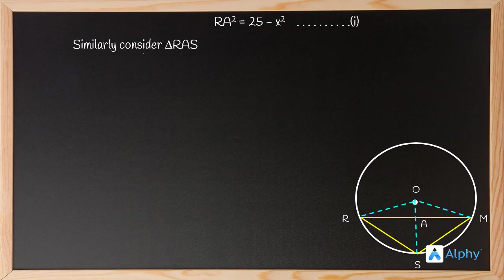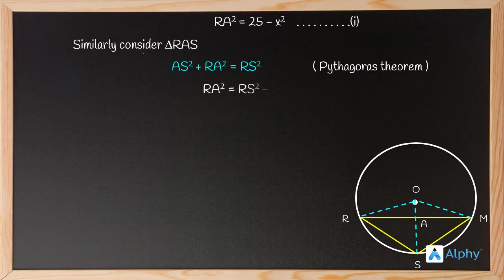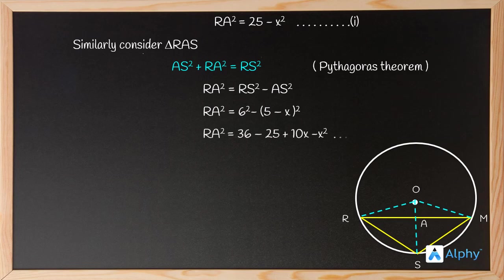Similarly, in triangle RAS, apply Pythagoras: AS² + RA² = RS², giving RA² = RS² − AS² = 6² − (5 − x)². Expanding using (a − b)² = a² − 2ab + b², and noting the negative sign causes a sign change: RA² = 36 − 25 + 10x − x² = 11 + 10x − x². Mark this as Equation 2.